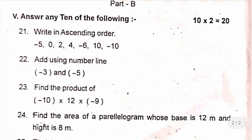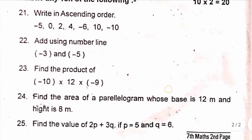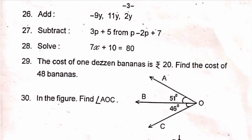Question 24: find the area of a parallelogram whose base is 12 meters and height is 8 meters — apply the area of parallelogram formula. Question 25: find the value of 2p plus 3q if p equals 5 and q equals 6 — substitute the values of p and q and find out. Question 26: add minus 9y, 11y, and 12y — you need to perform addition with the given terms. Question 27: subtract 3p plus 5 from p minus 2p plus 7.